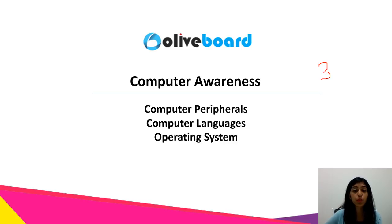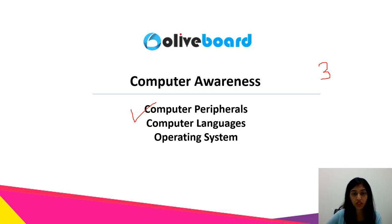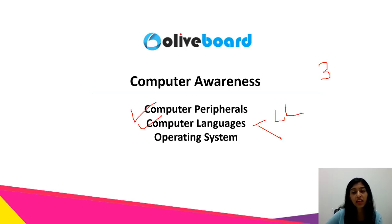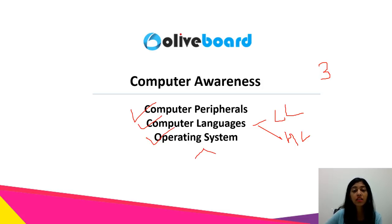In this video we will be talking about computer peripherals — that is the various other devices like keyboards, mounts etc. that we use along with the computers. We will also talk about computer languages — the low level language and the high level language — their types, and the operating system, including its characteristics and types.